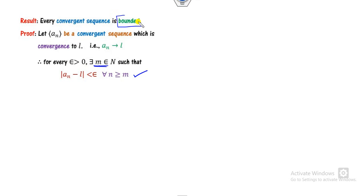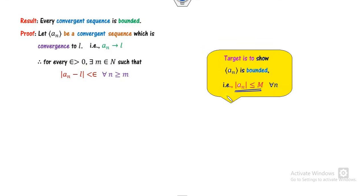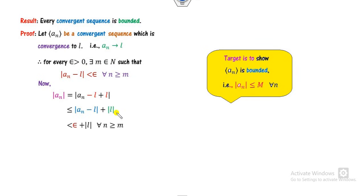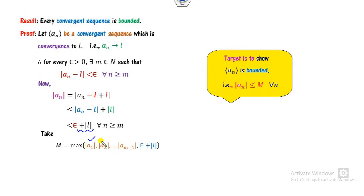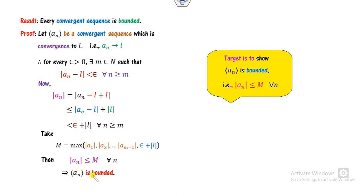Now the target is to prove that sequence An is bounded. Starting from the left-hand side, we can express An minus L as less than epsilon. This quantity is independent of N, meaning A1, A2, and so on are all bounded. So we take M as the maximum of this quantity and the bounds of A1, A2 up to Am minus 1, since this bound holds for N greater than M. Therefore this sequence is bounded — every convergent sequence is bounded.